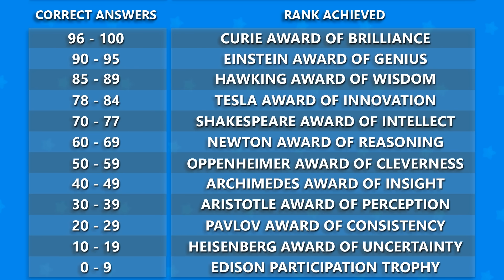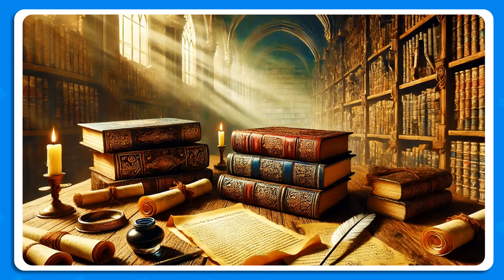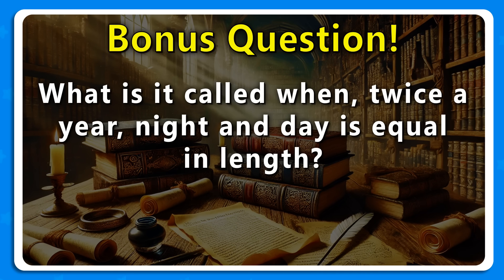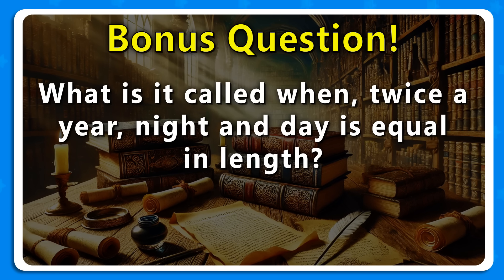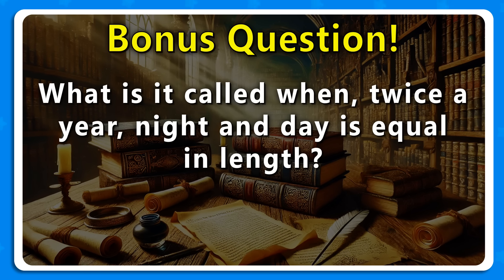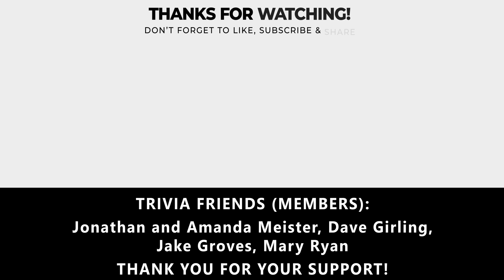And that's it, we have reached the end of today's super quiz. How many questions could you answer correctly? Take a look at which rank you managed to get and share your result in the comments below. Also, don't forget to answer the bonus question: what is it called when twice a year, night and day are equal in length? If you know the answer, share it in the comments. And if you enjoyed this quiz, please leave a like and consider subscribing — it really helps. Thank you so much for watching.